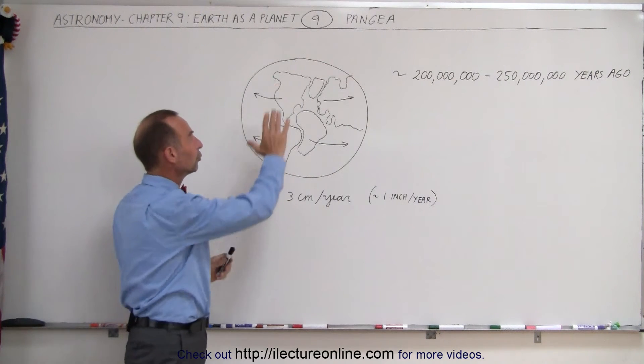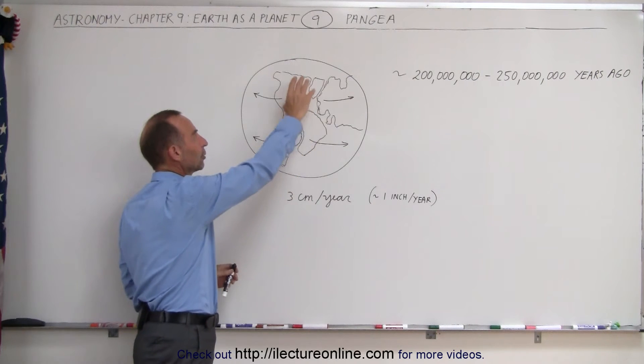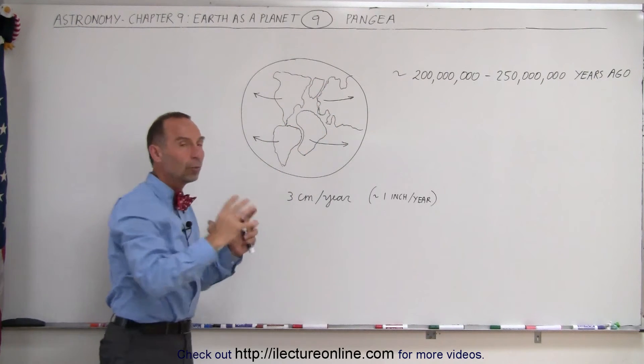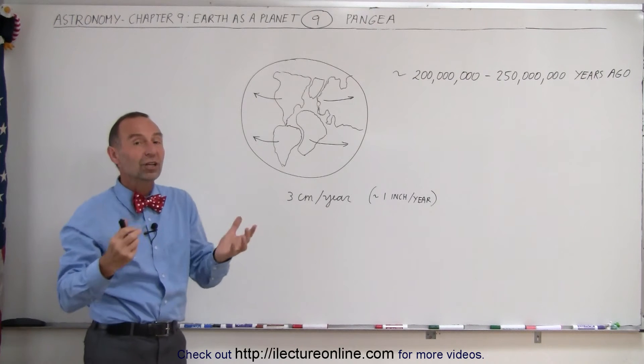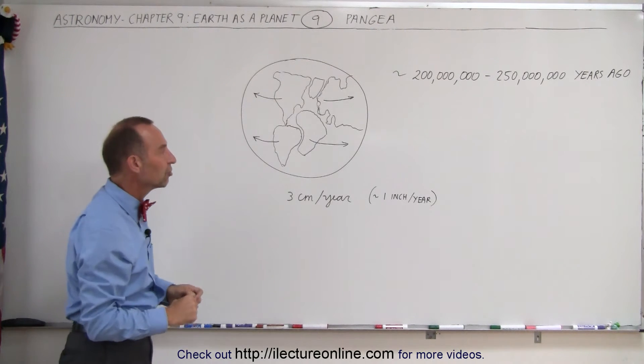And when all those land masses were together - North America, South America, Africa, Greenland and Eurasia all put together - that land mass was known as Pangea. One land mass, that's what Pangea means.